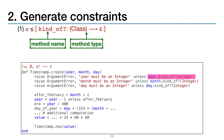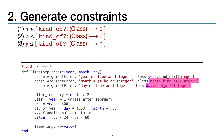Here's our first constraint. We call the method kind_of? on the parameter year, so we generate a structural type constraint on alpha, the type for year. The structural type says that alpha must have a method called kind_of? defined, and it gives the type for that method — it takes a class as input, and we generate a fresh type variable epsilon for its output type. Month and day are used in nearly identical expressions, so we generate very similar constraints on beta and gamma, the types for those parameters.